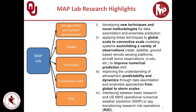Our lab has been conducting research in a very wide scope under data assimilation and predictability. We develop new techniques and novel methodologies for data assimilation and ensemble prediction, and apply them to a variety of numerical weather prediction systems including convective scales, hurricanes, and global scales. We assimilate a variety of observations including radar, satellite, ground-based remote sensing platforms, aircraft observations, and in situ observations, with the goal of improving numerical predictions at a variety of scales. We also use data assimilation modeling and ensemble prediction as tools to improve understanding of atmospheric predictability and dynamics from storm scales to global scales.